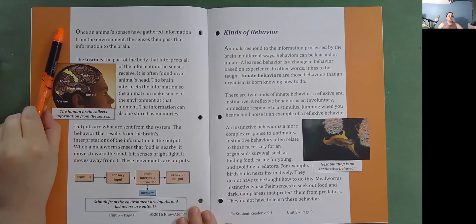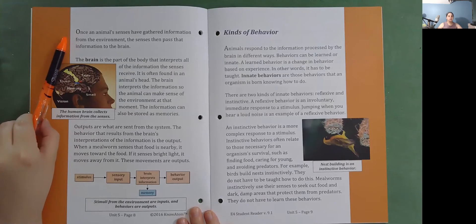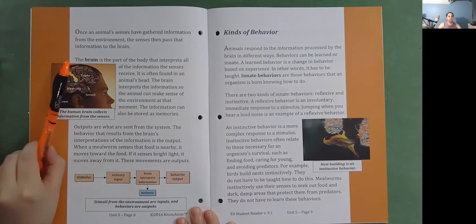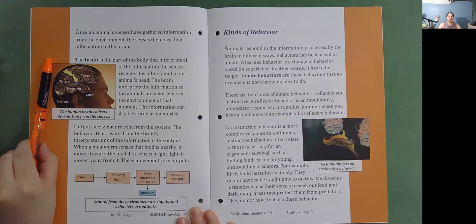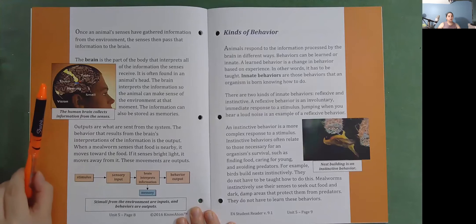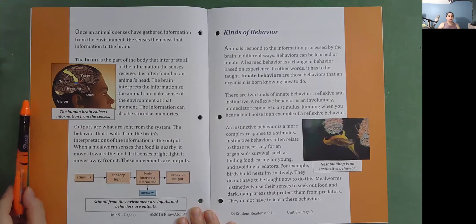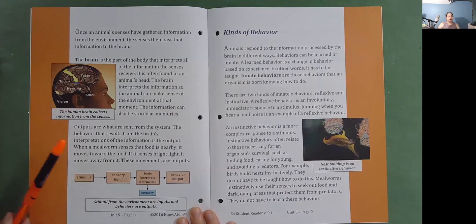Once an animal's senses have gathered information from the environment, the senses then pass that information to the brain. The brain is the part of the body that interprets all of the information the senses receive. It is often found in an animal's head. The brain interprets the information so the animal can make sense of the environment at that moment. The information can also be stored as memories. Outputs are what are sent from the system.